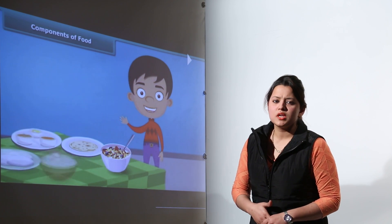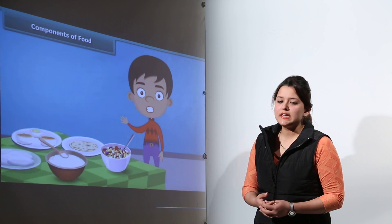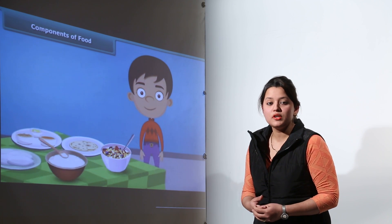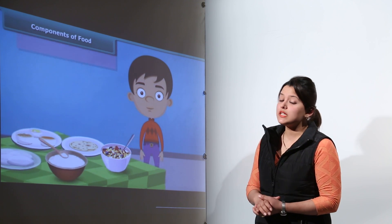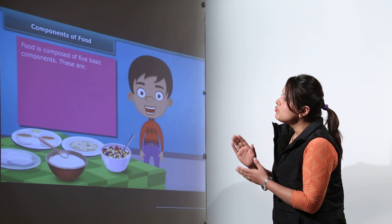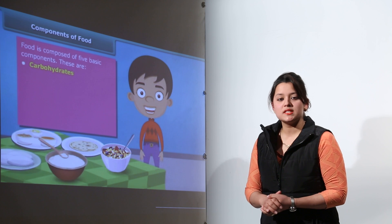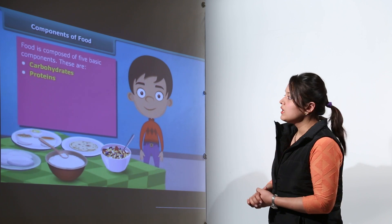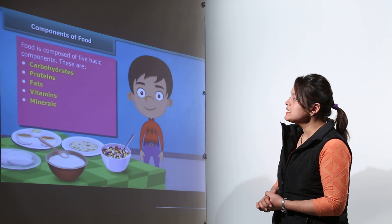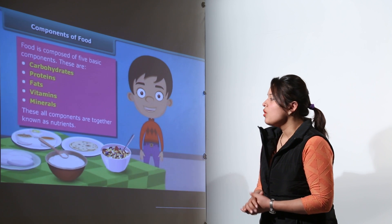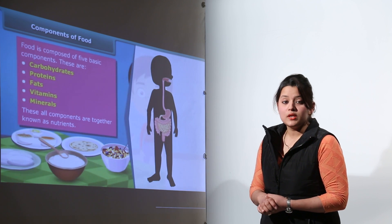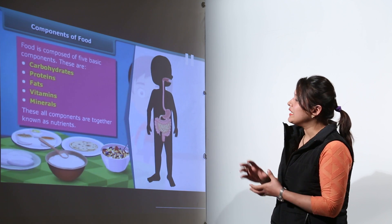Components of Food. We eat so many different varieties of food, and each food item has different nutrients. Each nutrient is very important for our body. Food is composed of 5 basic components: carbohydrates, proteins, fats, vitamins, and minerals. All these components together are known as the nutrients.